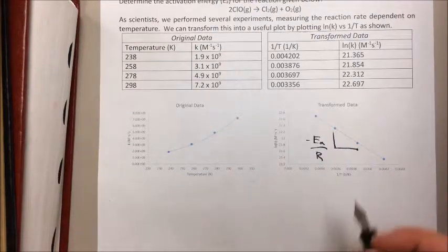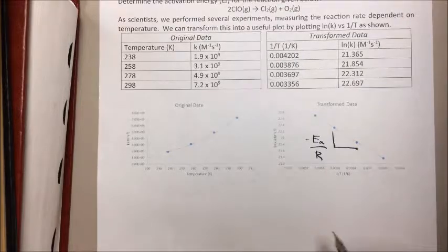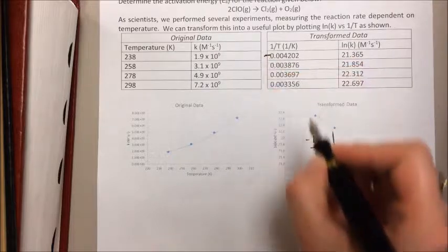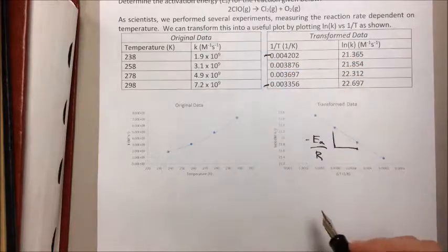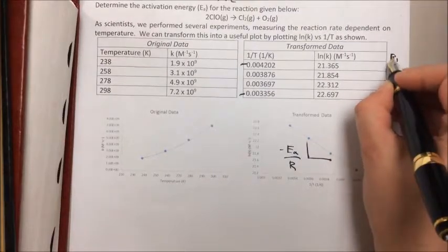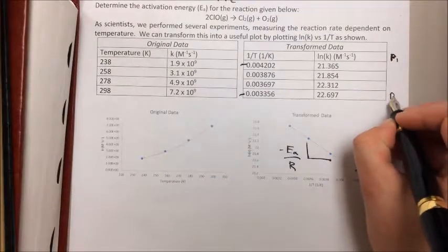All I need to do is take the slope of this line. So I'm going to pick two of those points. I'm going to go ahead and pick both the first point and the last point. I'm going to designate this as my P1 and this as my P2.